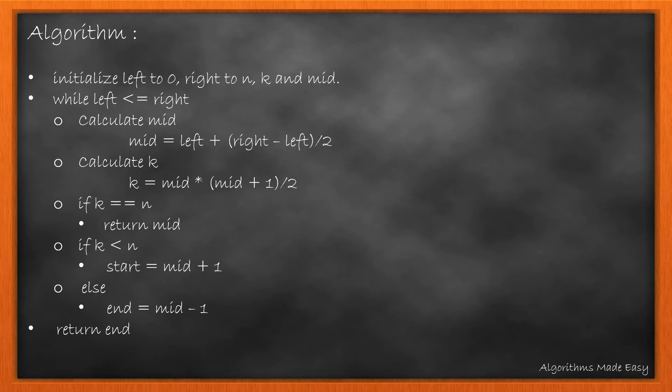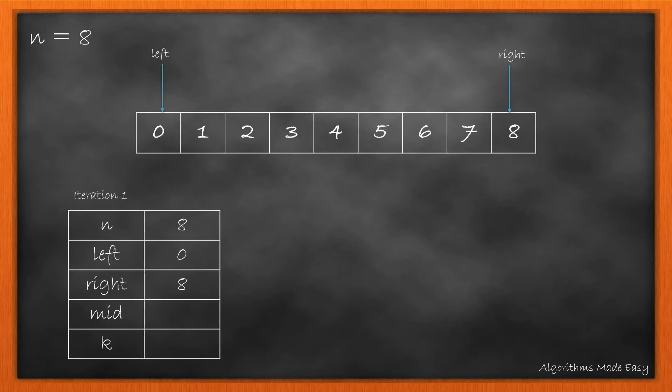Let's see it with an example. Let's take n as 8. Initially, n will be 8, left will be 0 and right will be 8.